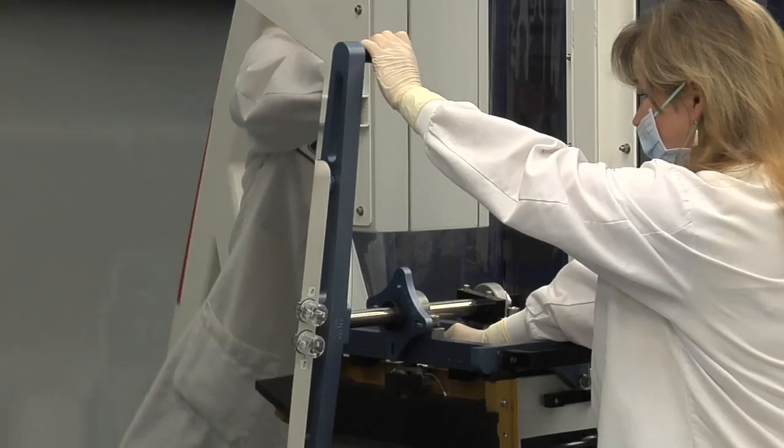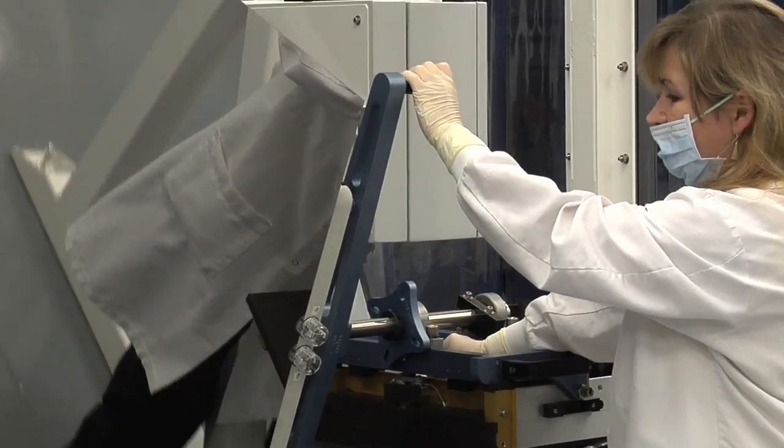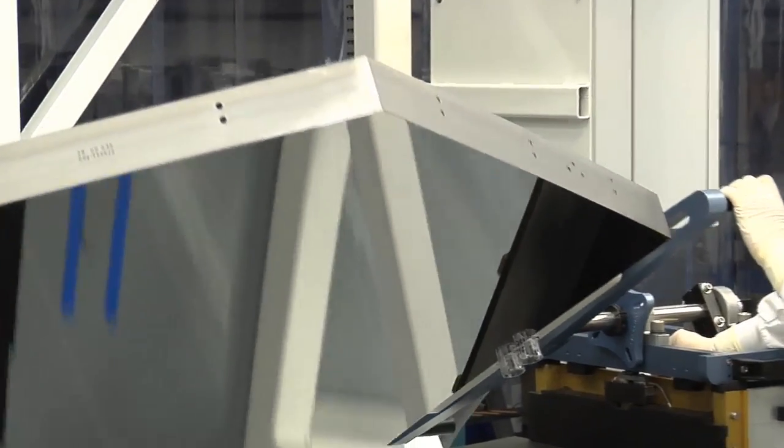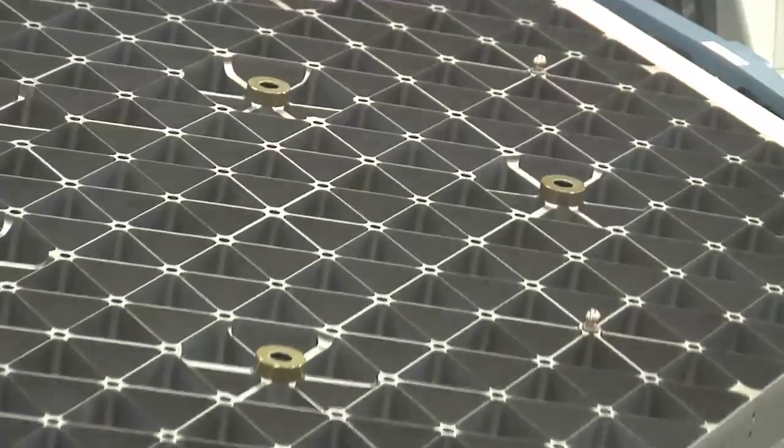You can see the front side surface is highly polished. As we rotate to the back side surface, you'll see that there is a honeycomb light weighting, so it reduces the payload when it goes up into space, and yet it's very stiff.